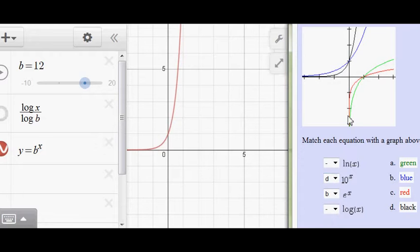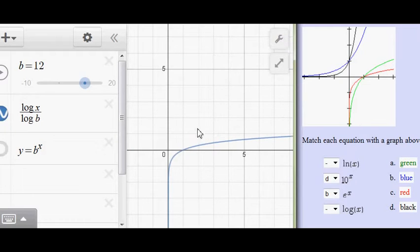Now let's explore logarithms. So turning off the exponential over here and turning on the logarithm graph right here, you'll notice—let me go back to a base of about 2 or so—what happens as the base gets bigger with logarithms is just the reverse of an exponential.